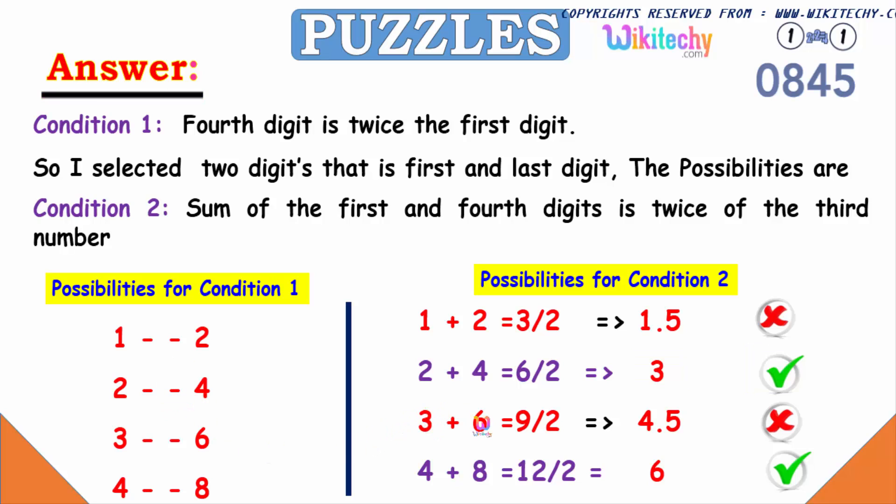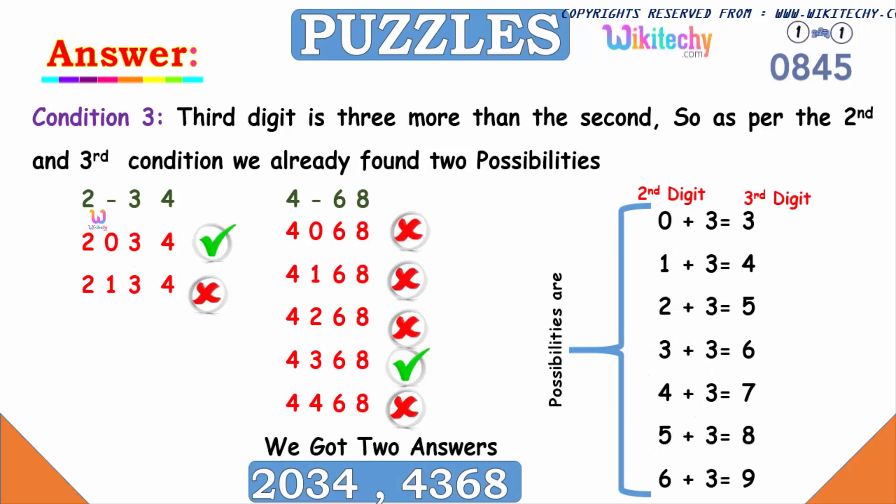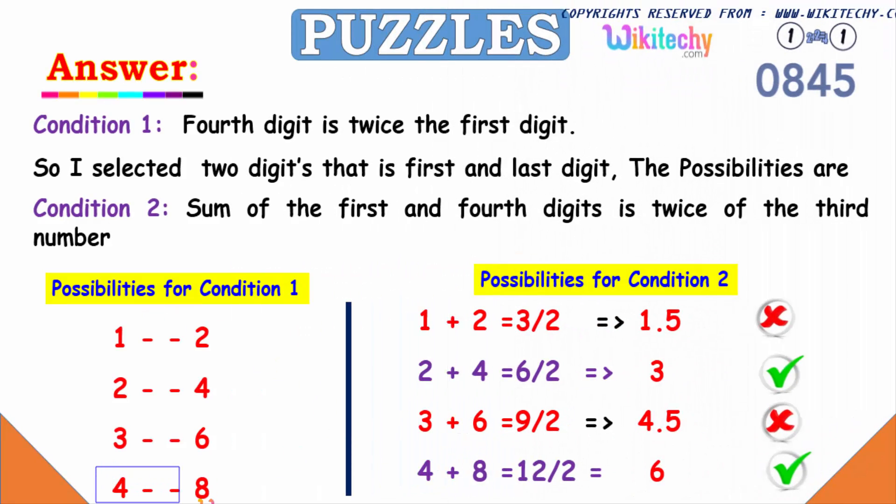Three plus six, nine divided by two, indicates it's four point five. It's a floating value, so it's not possible. Four and eight, four plus eight is twelve, divided by two is six. The possibility is it can be three or it can be six. So here is the condition, it's two and you got four here. It can be this one or this one. These two are discarded.